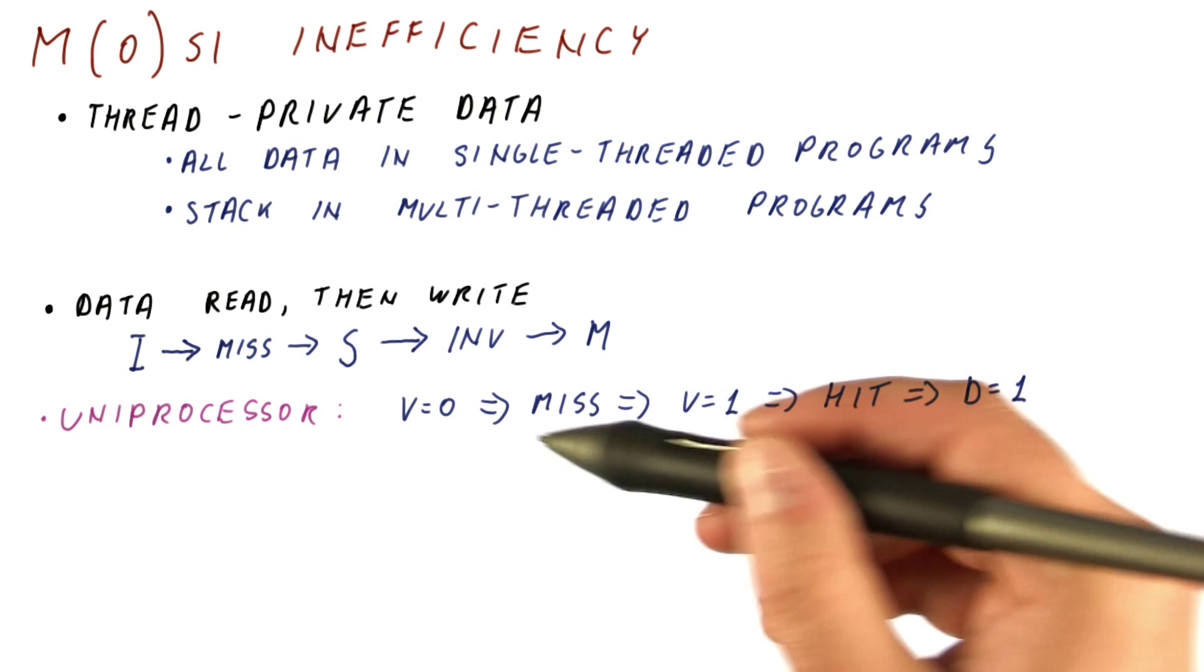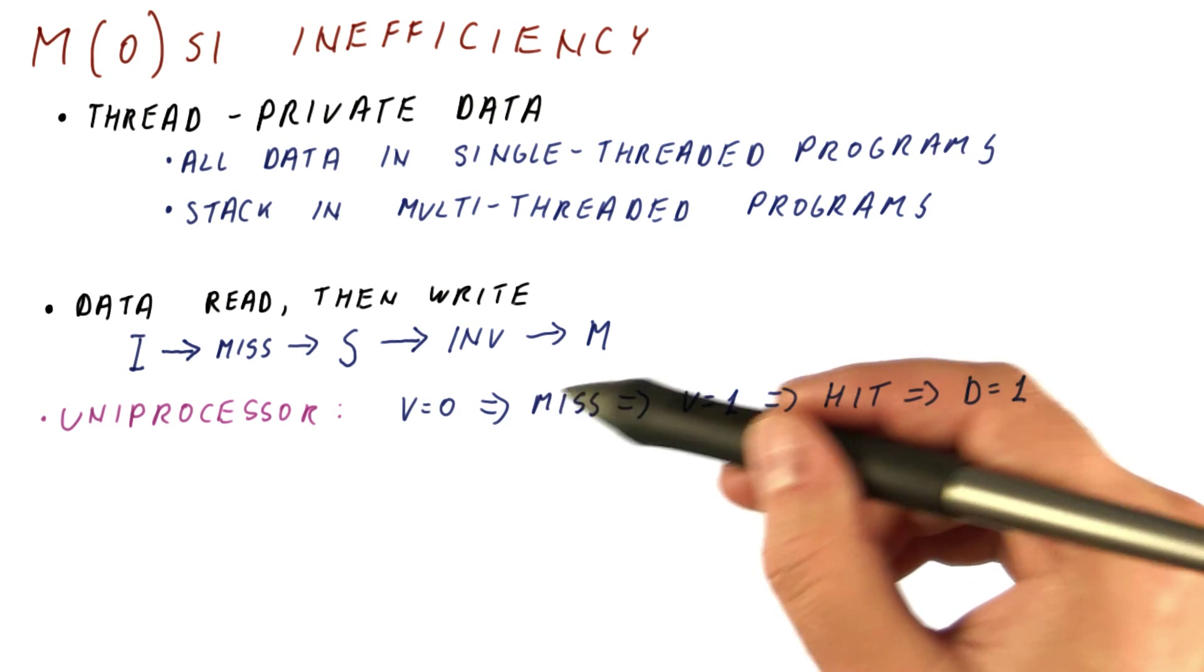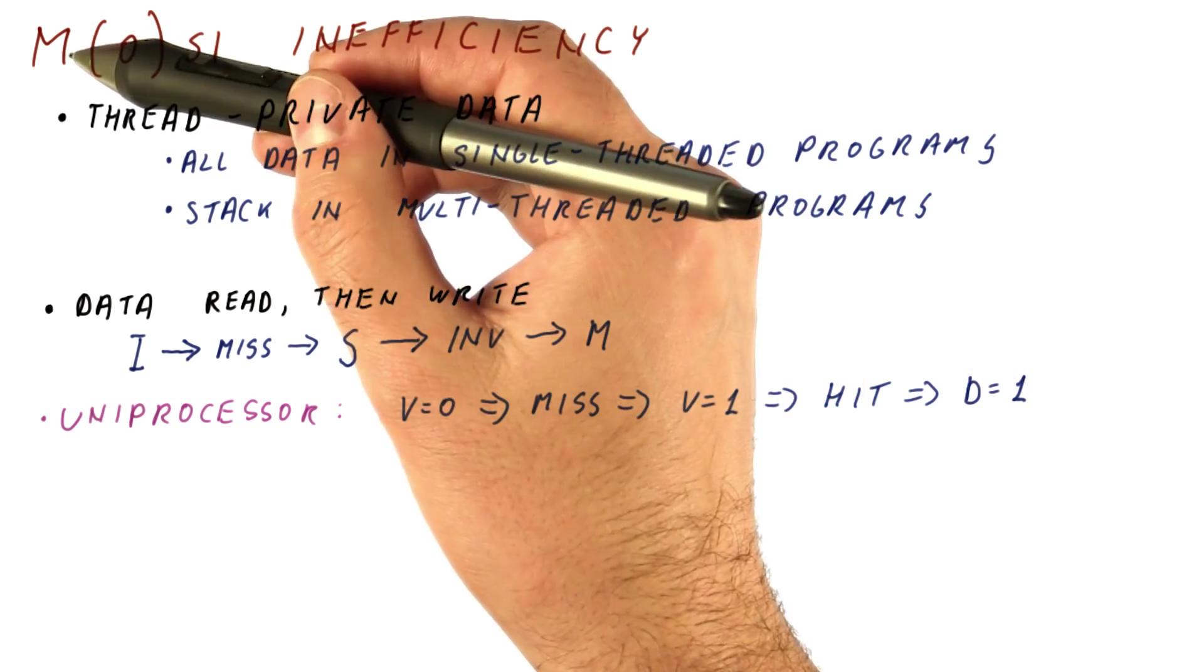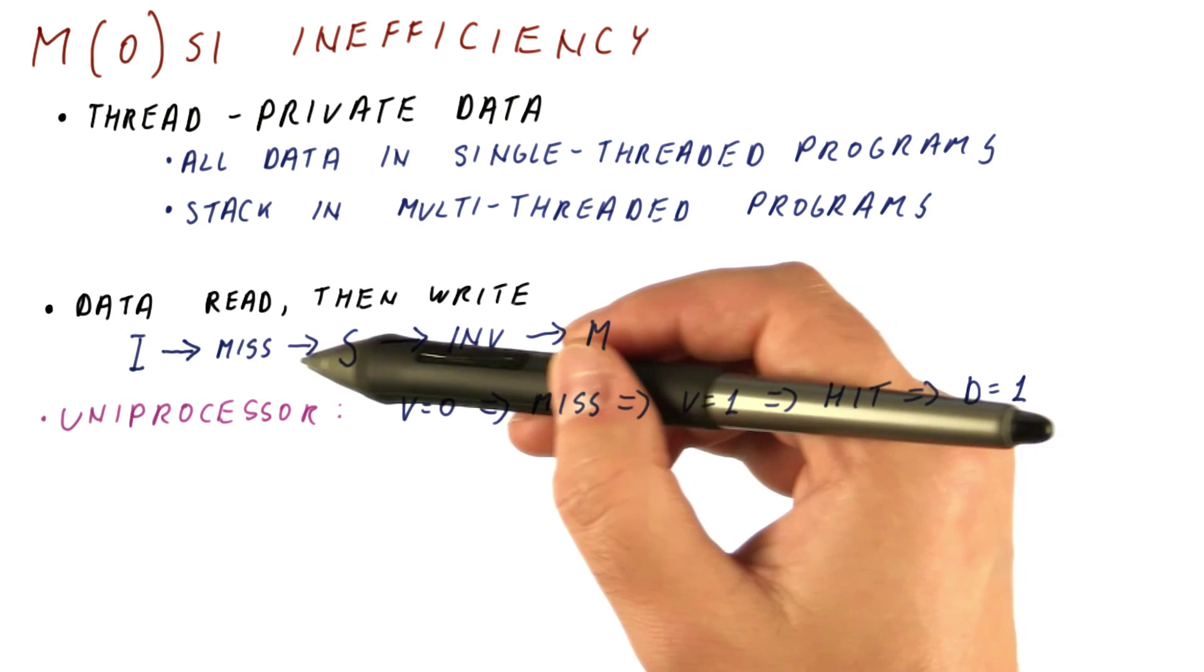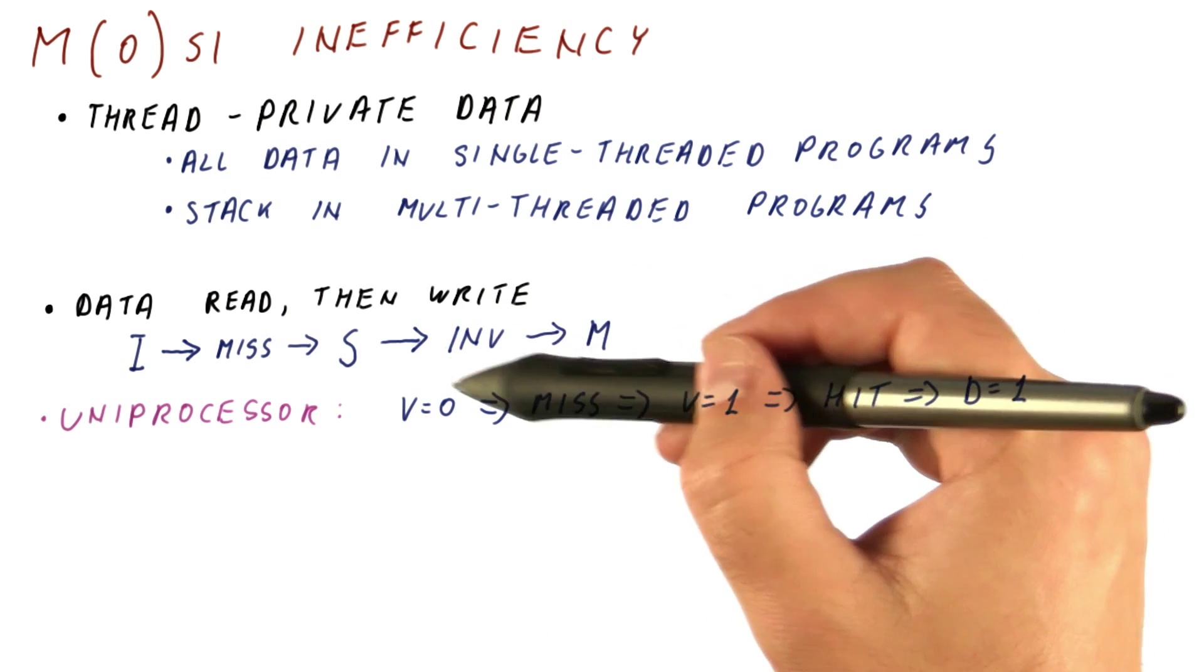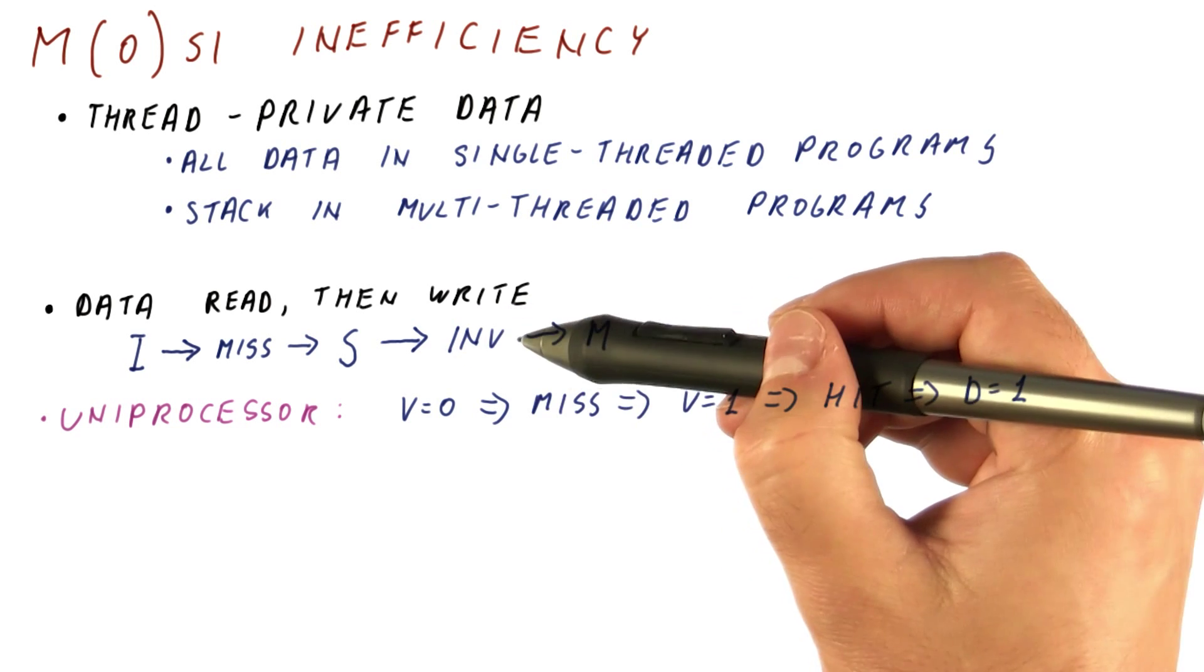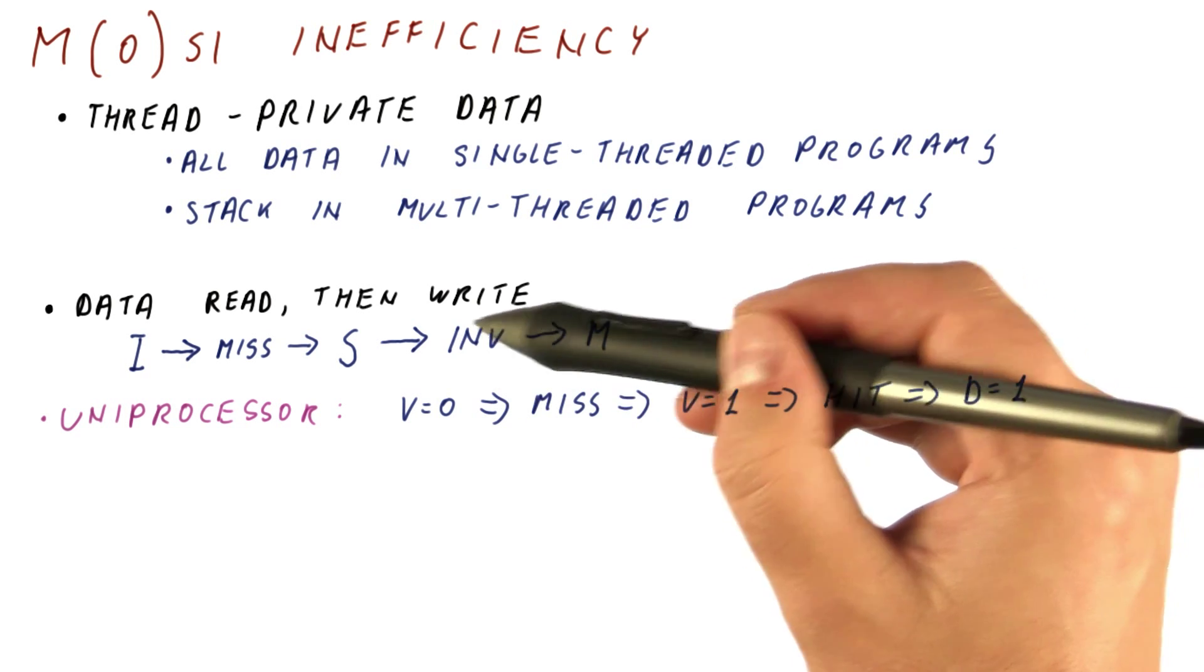So a uniprocessor gets to do a miss and then a hit, whereas with MSI or MOSI, we have to do a miss followed by another bus request. Granted, it doesn't carry data, but we still have to wait for the bus and send something outside the chip.